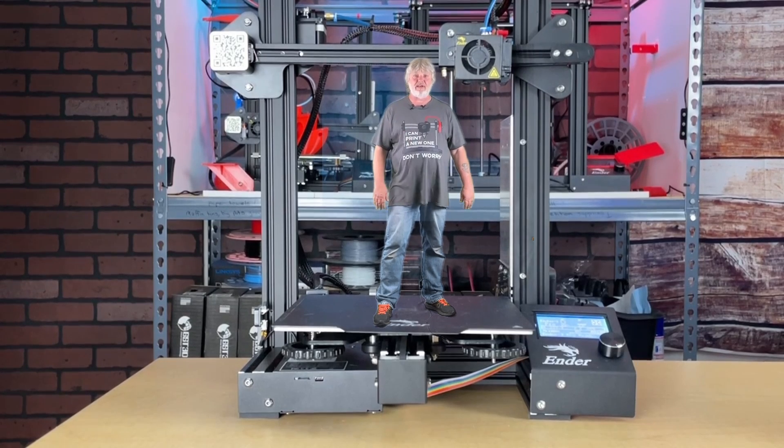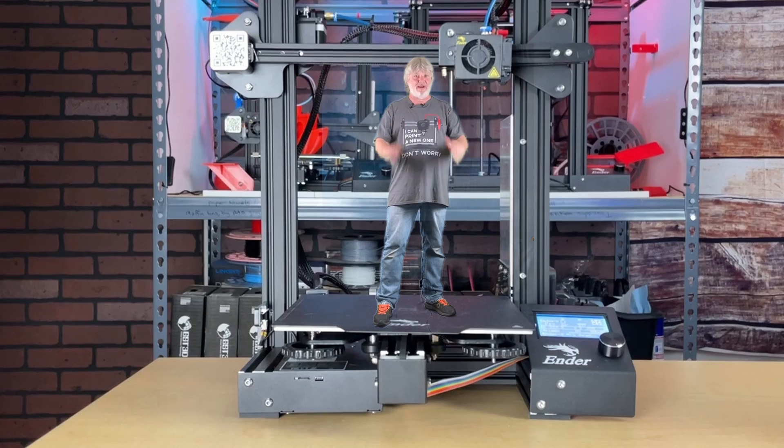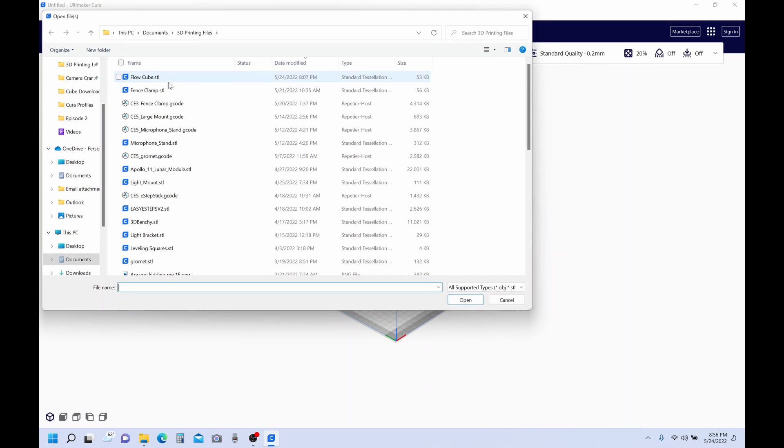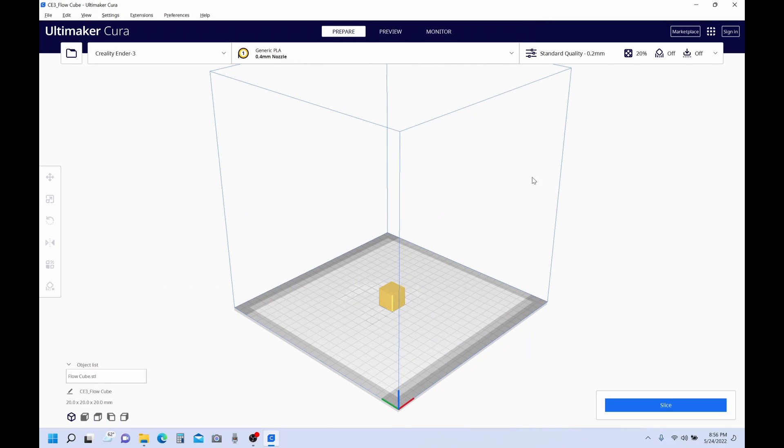Go ahead and download it, save it somewhere where you can easily find it, and we'll get right to it. Now that we have our flow cube downloaded, let's bring it into our slicer. So we'll go to file, open files, we'll browse to it, and it happens to be right here, flow cube, open that up, and there it is, right in the center of our bed plate.